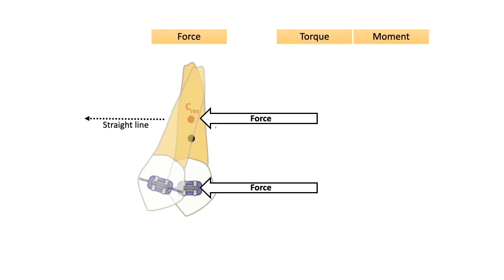The center of resistance is on the embedded part of the root. One can apply force on the exposed part of the tooth, which is at a distance from the center of resistance. Thus with a single force, invariably a moment is created. Moment is the product of force times the perpendicular distance from the point of force application to the center of resistance.